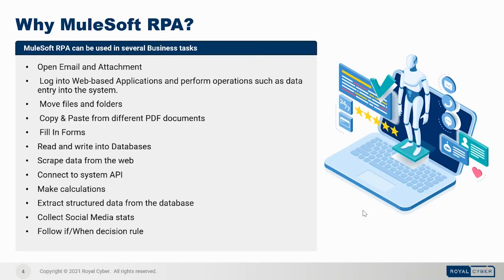MuleSoft RPA can be used in several business tasks: open email and attachments, log into web-based applications and perform operations such as data entry, move files and folders, copy and paste from different PDF documents, fill in forms, read and write into databases, scrape data from the web, connect to system APIs, make calculations, extract structured data from databases, collect social media stats, and follow if-or-when decision rules.